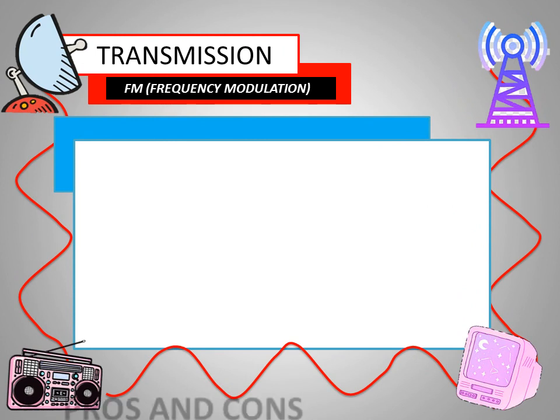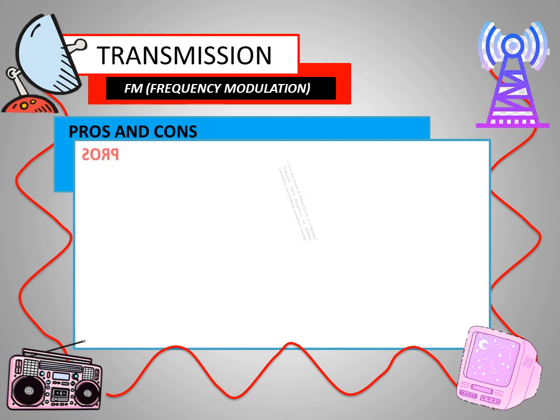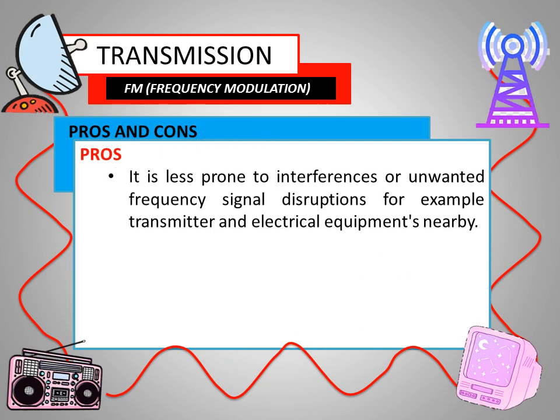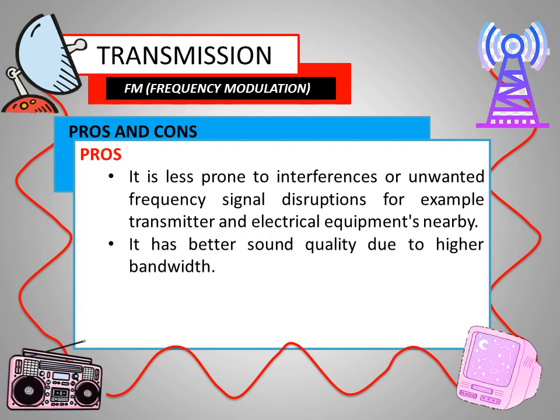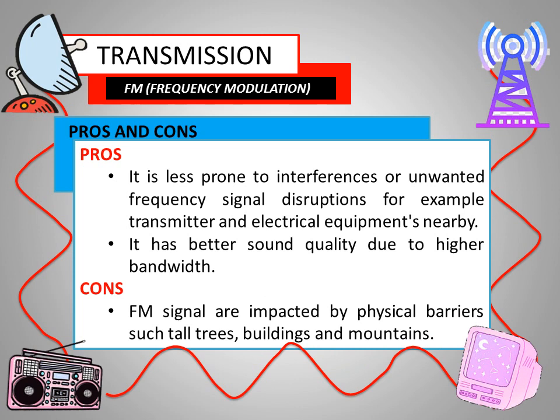The FM transmission also has pros and cons. For the pros, it is less prone to interference or unwanted frequency signal disruption — for example, from a transmitter or electrical equipment nearby. It also has better sound quality due to higher bandwidth. For the cons, FM signals are impacted by physical barriers such as tall trees, buildings, and mountains.